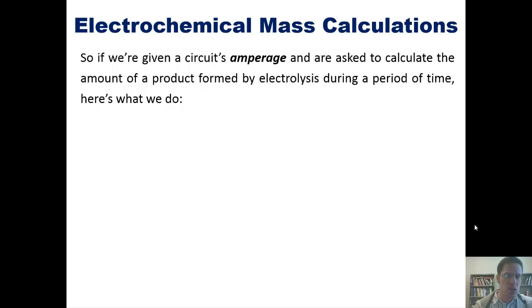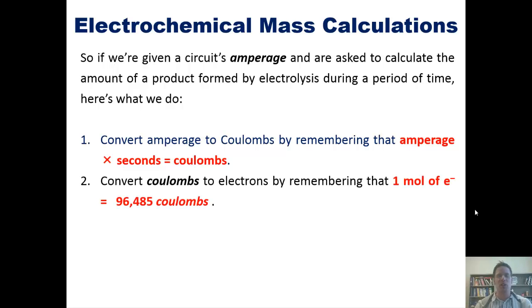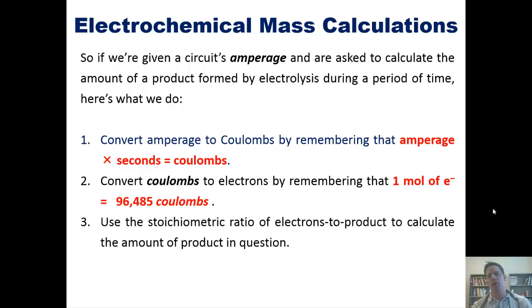So if we're given a circuit's amperage, and we're asked to calculate the amount of a product formed by electrolysis during a period of time, here's what you have to do. First, convert amperage to coulombs by remembering that amperage times seconds equals coulombs. Second, convert coulombs to electrons by remembering that one mole of electrons equals 96,485 coulombs. And third, use the stoichiometric ratio of electrons to products to calculate the amount of product in question. Are you totally confused? All right, let's take a look at a problem.